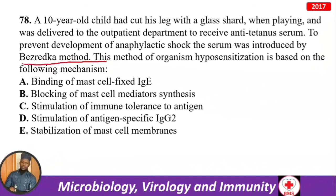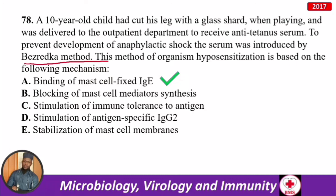A 10-year-old child cut his leg with a glass shard. To receive anti-tetanus serum and prevent anaphylactic shock, the serum was introduced by the Bezredka method (red cast method) — a method of hyposensitization. Giving an allergen little by little allows the immune system to tolerate it, preventing hypersensitivity. This mechanism is based on mast-cell-fixed IgE. For allergies: IgE and eosinophils are the key players.